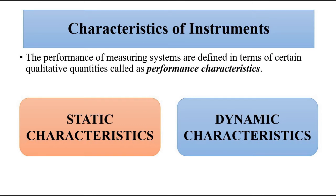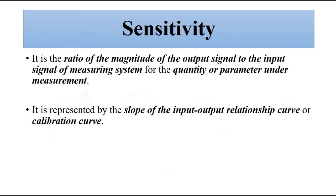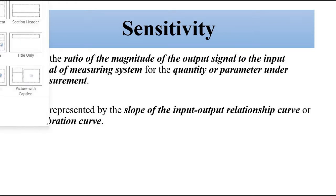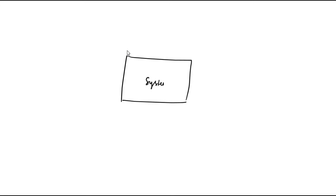In this video we are going to discuss an important characteristic related to establishing the input-output relationship of a measurement system, which is called sensitivity. When we discuss sensitivity, there are other parameters that will come into play, but we won't discuss them now to avoid confusion. In simple words, let's say we have a measurement system — we give it an input, a measurement parameter, whatever we are trying to measure, and we get a particular output.